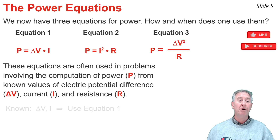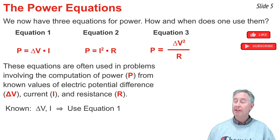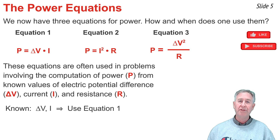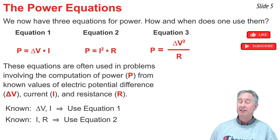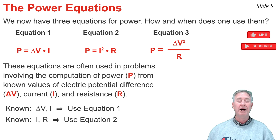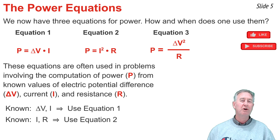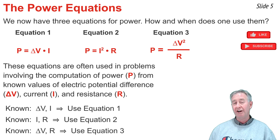If you're given the values of both delta V and I, then equation one is the equation to use to calculate power. But if you don't know both delta V and I, but maybe you know I and R, you'd use equation two to solve for power. If what you know is delta V and R, then you're going to be using equation three to solve for the power.